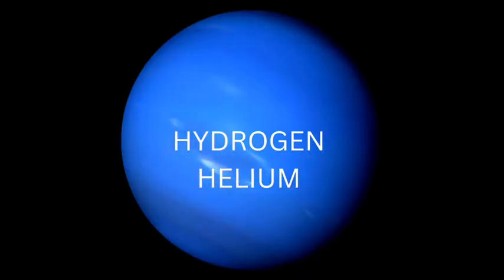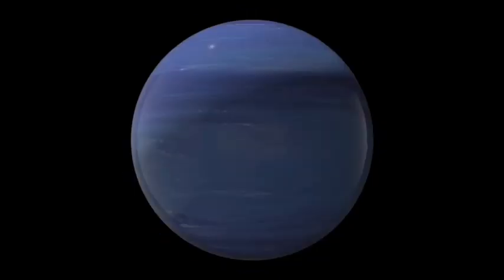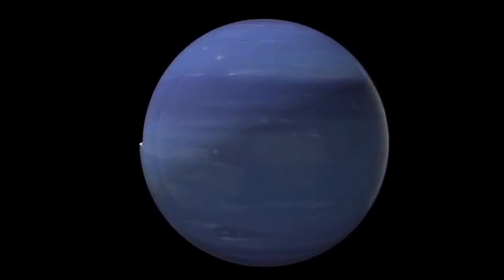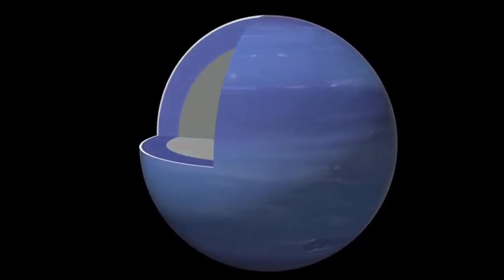Most of Neptune's visible atmosphere consists of hydrogen, more than 80%, and helium, 15%. Based on the overall density of Neptune, heavier elements are located in its depth.